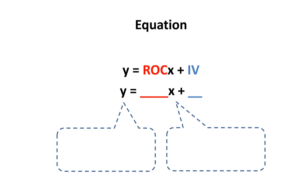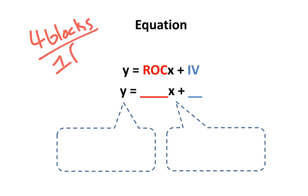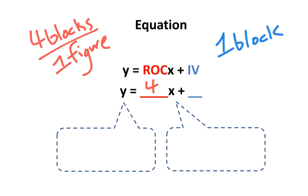We already determined the rate of change to be an increase of 4 blocks for every 1 figure. 4 over 1 is the same thing as 4 divided by 1, which is the same thing as just 4. Therefore, the rate of change can be simplified to just 4. Moreover, the initial value is 1 block, since that is the number of blocks in figure 0. Therefore, I can write 1 as the initial value.